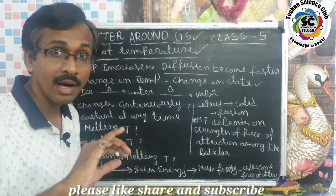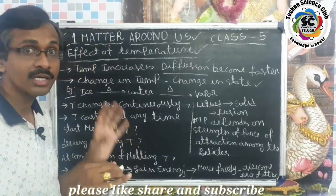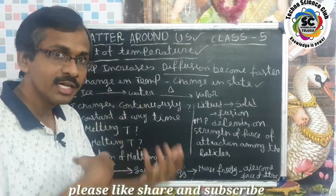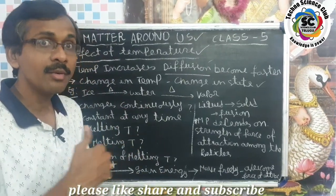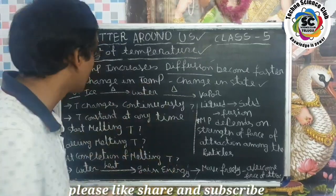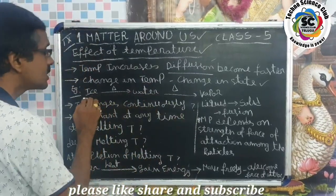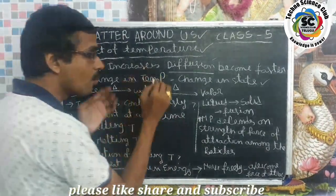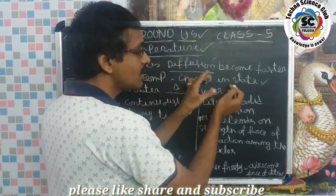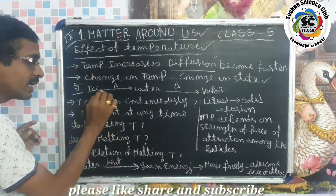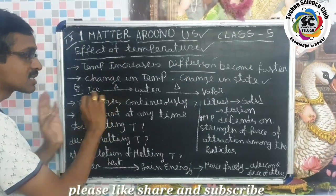So the temperature causes a change from solid state to liquid state. For example, water changes to vapor. Heat changes the state of matter — solid to liquid, then liquid to vapor, and the reverse process is condensation.